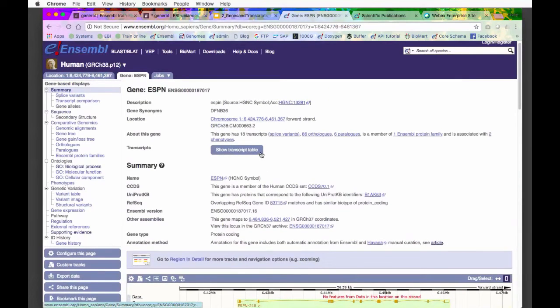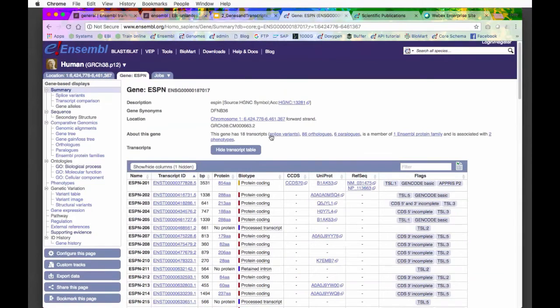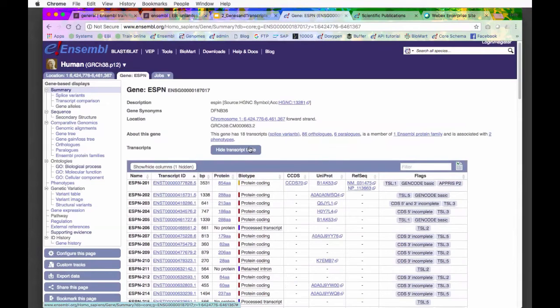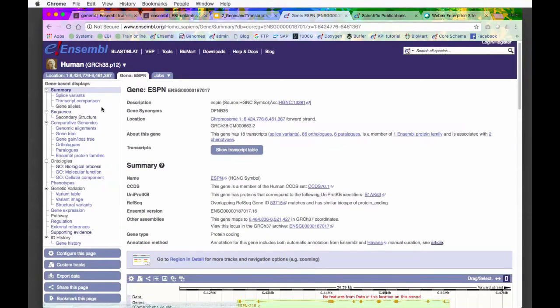If I scroll down, I can see a graphical display of the gene transcripts. I've also got this button here to show transcript table. If I open this up, we've got our transcript table listing all our different transcripts. You'll see we've got the colors that I mentioned earlier. We can see what biotype they are and things like CCDS and these flags I mentioned before. I'm going to hide the transcript table for now.